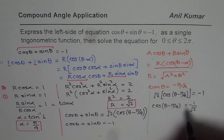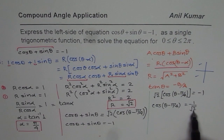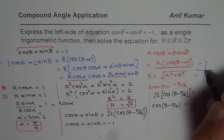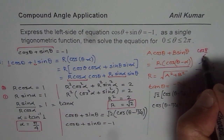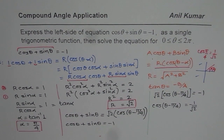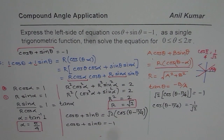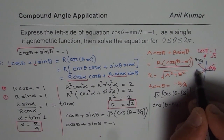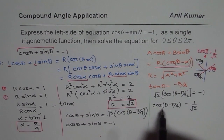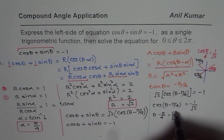Cosine is negative in quadrants 2 and 3. We need the value 1/√2, which corresponds to an acute angle of π/4, since cos(π/4) = 1/√2. So the two solutions for (θ - π/4) are: π - π/4 = 3π/4, and π + π/4 = 5π/4.